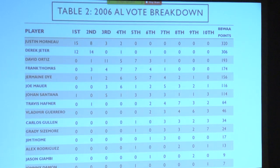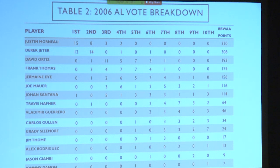This is what the ballot breakdown looks like: 28 voters ranked their top ten and submitted it to the Baseball Writers Association of America. Thankfully the BBWAA is very transparent about their process — they release the breakdowns, and in past years they've even released the individual ballots so you can look up who each voter voted for. That was incredibly useful for my analysis.